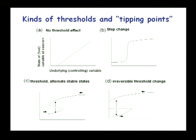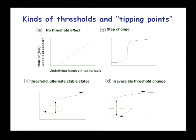There are in fact four possible kinds of combinations of these relationships. Some might be curvilinear. There's a step change one, and then there are two which have a hysteretic effect — meaning there are two stable states for the same amount of the underlying controlling variable. That's an unstable equilibrium or threshold between them. If the system's just on one side, it goes up; on the other side, it goes down. There are many examples of all of those.